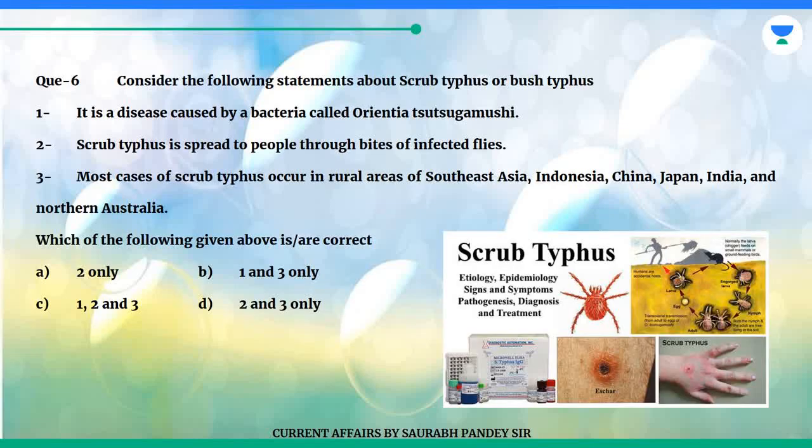Question 6: Consider the following statements about scrub typhus or bush typhus. 1. It is a disease caused by a bacteria called Orientia Tsutsugamushi. 2. Scrub typhus is spread to people through bites of infected flies. 3. Most cases of scrub typhus occur in rural areas of Southeast Asia, Indonesia, China, Japan, India and Northern Australia.